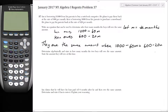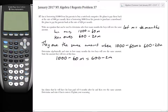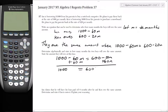So now the next part: determine algebraically and state in how many months the two boys will owe the same amount, and then state the amount that they will owe at this time. So let's solve this equation algebraically: 1,000 minus 60M equals 600 minus 20M. Add 60M to both sides. I know I can subtract 600 from both sides as well, but I generally recommend doing one thing at a time. That gives us 1,000 equals 600 plus 40M.